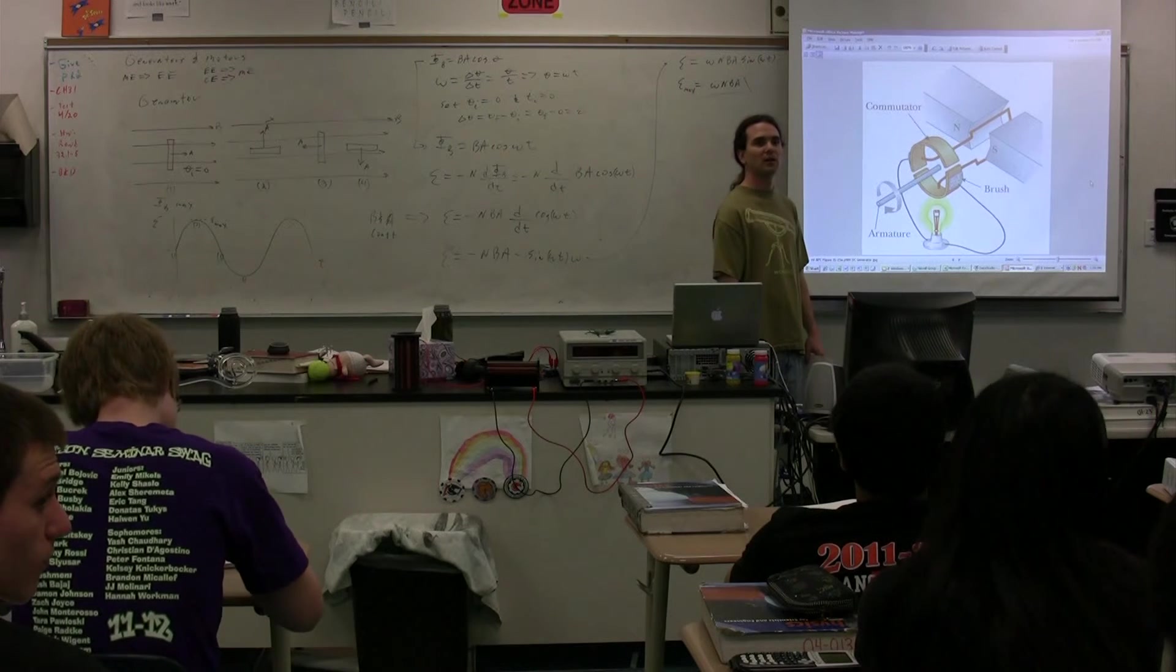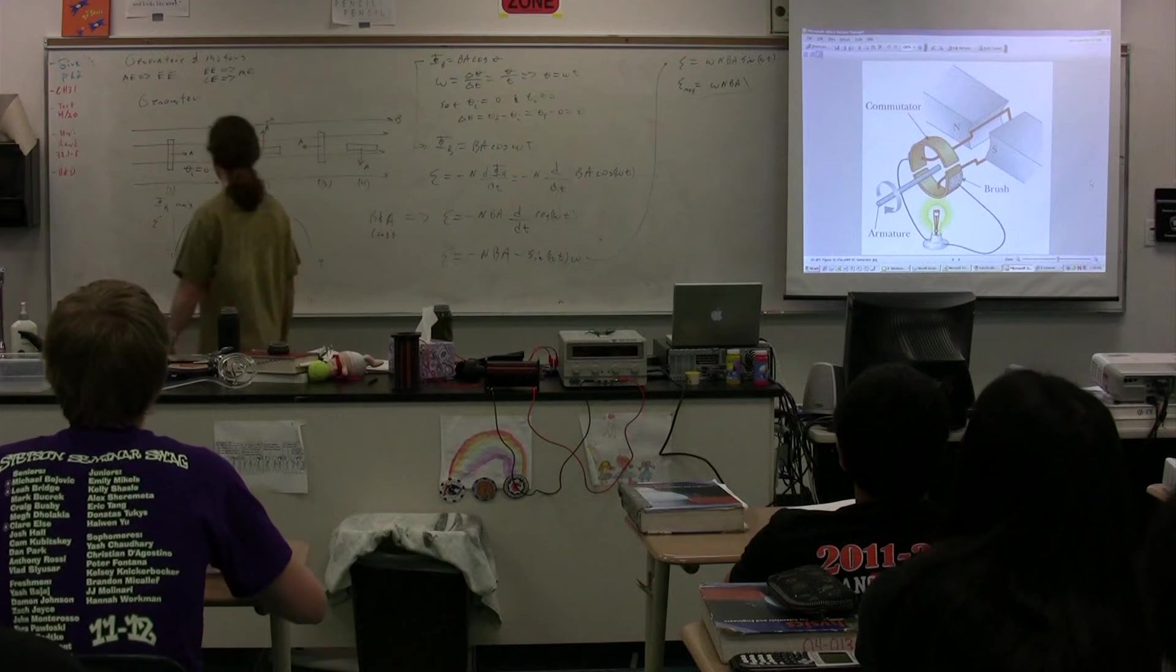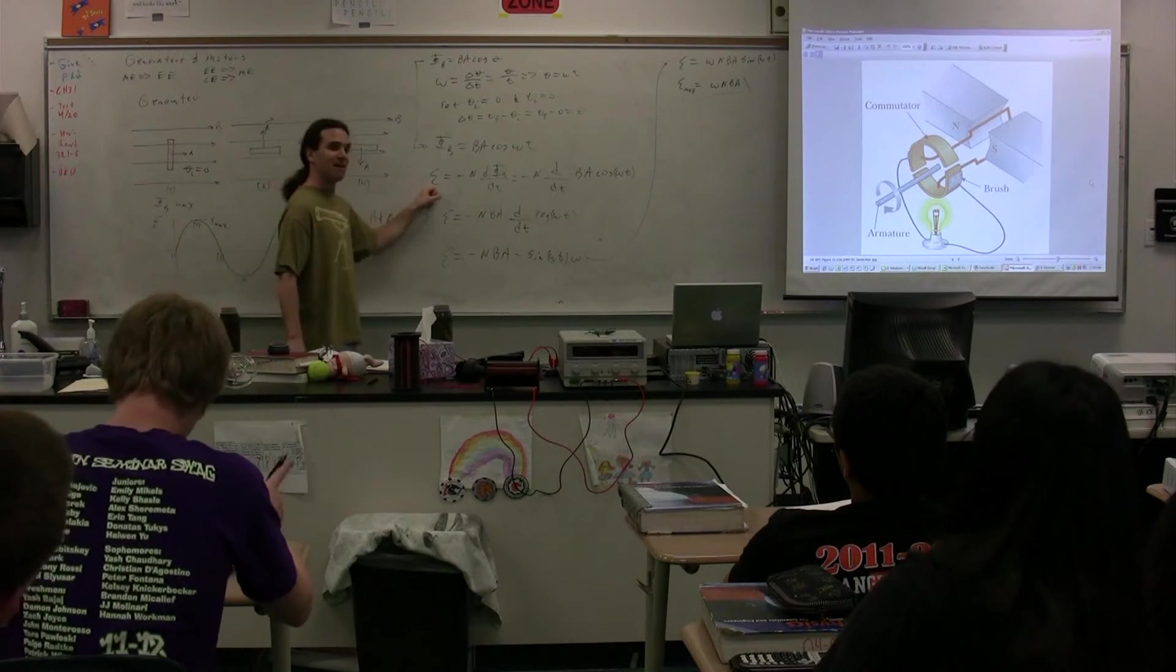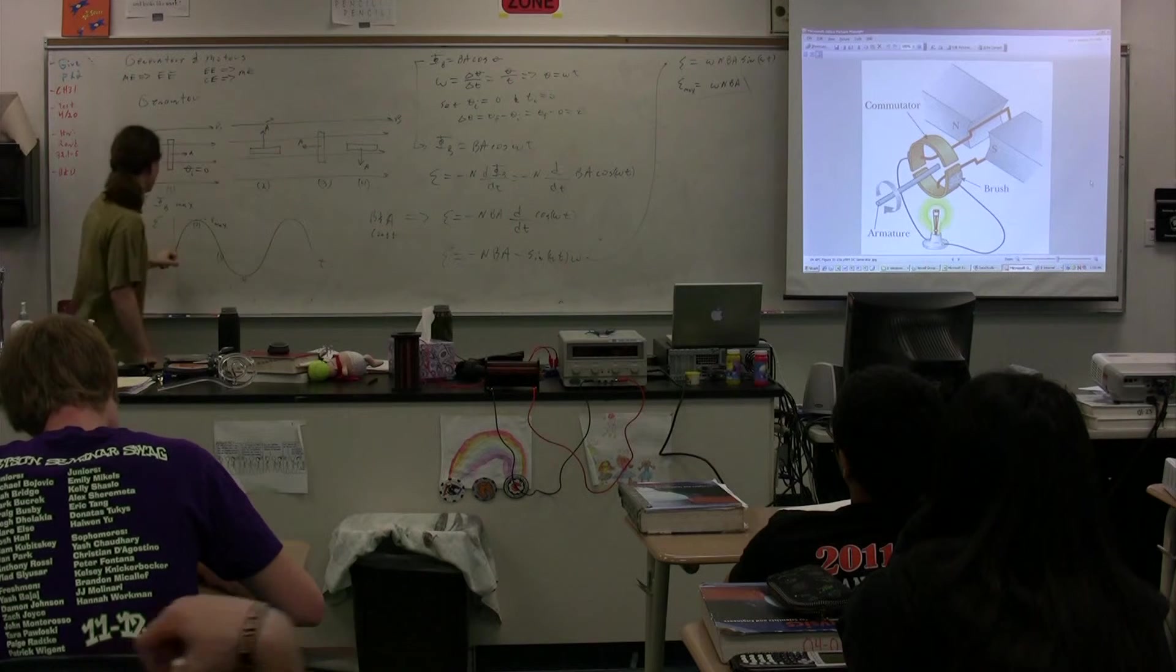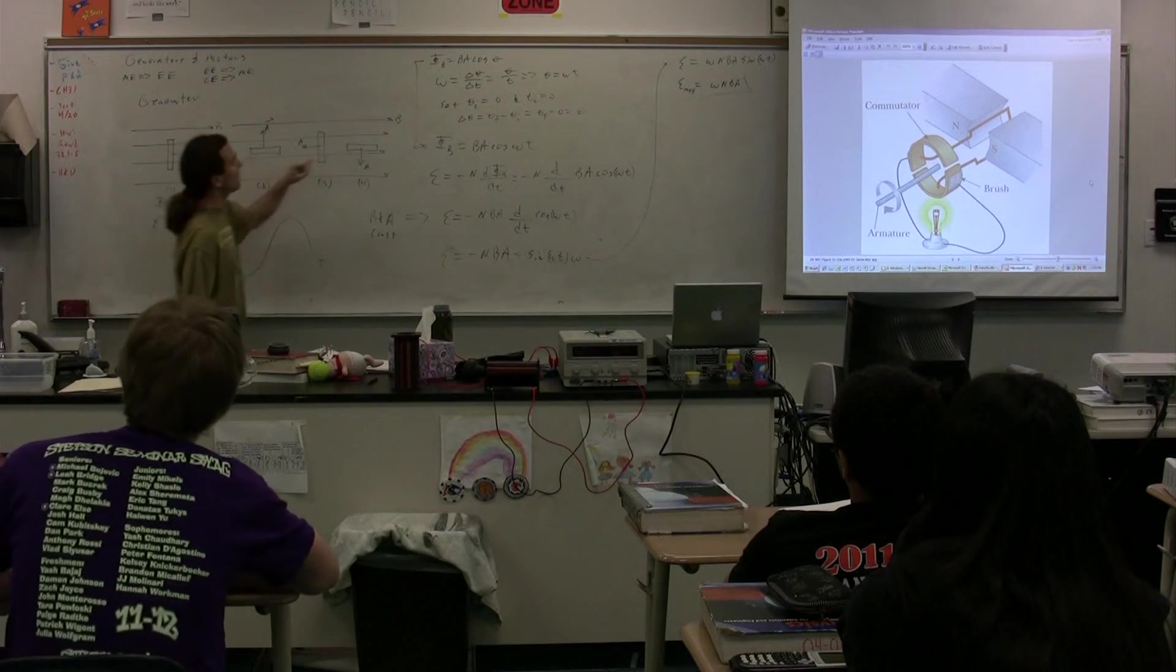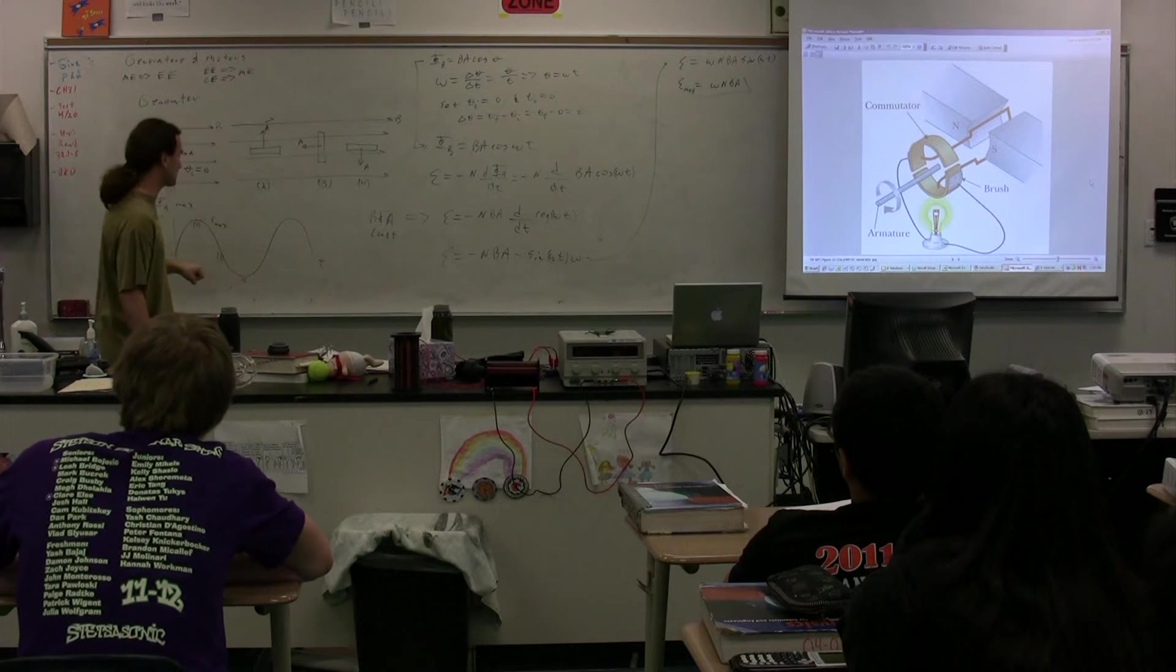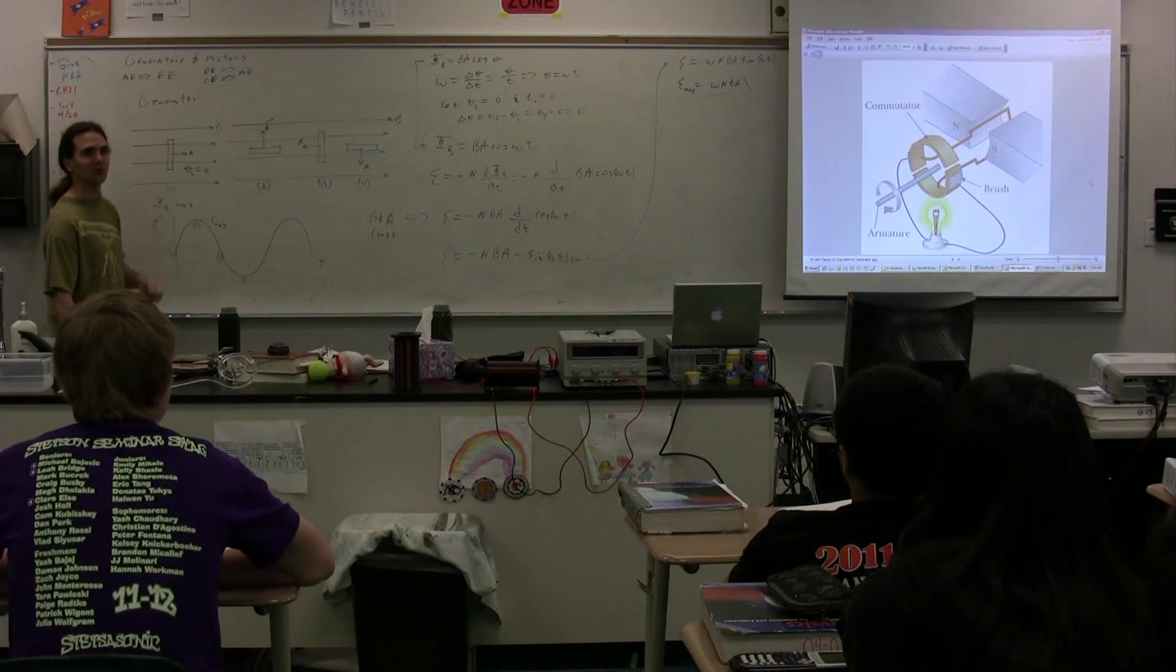Student asks: That's the EMF at position 1. I thought position 1 was at its max. Instructor responds: That's where the flux is at its maximum. Right? But remember, the EMF is the derivative of the flux. So, again, this is the, this would be essentially the cosine wave. Right? The flux is the cosine wave. But we figured out the derivative of it, which is going to be the sine wave. Which is probably where Emily's encoded slip was coming from. Right? But remember, this is sine, whereas this was the cosine.